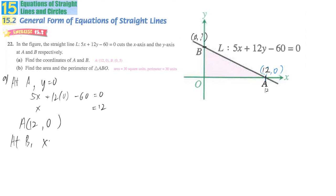So x is equal to 0, which is given by the graph. 5 times 0 plus 12 times y minus 60 equals 0. y equals 5. So the height here is 5. We say that B is 0, 5.